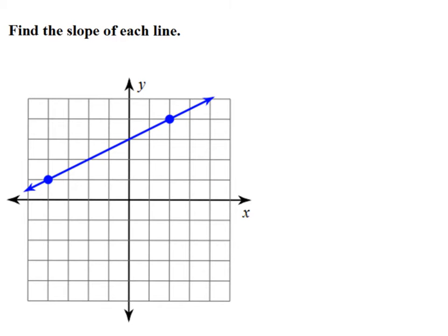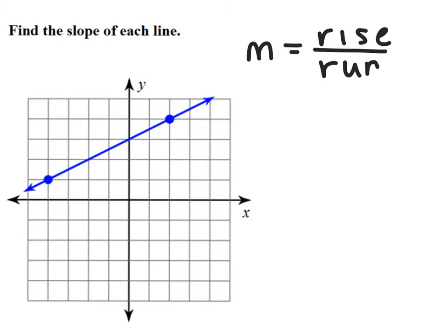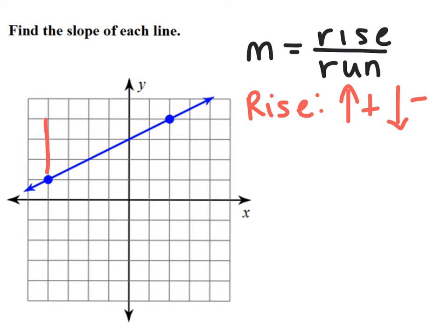In order to calculate the slope from a graph, I first have to figure out what the rise is and what the run is. The rise is the movement up and down. If I'm moving up, it's positive, and if I'm moving down, it's negative. To move from the left point to the right point, I'm moving up positive three units.